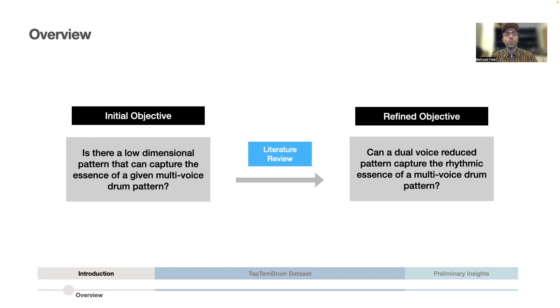If so, we wanted to know what would be the ideal dimensionality of such pattern. After some extensive literature review conducted by my colleague Blazer, we found evidence that if there exists a reduced representation, a dual-voice pattern should most likely be enough for capturing the rhythmic essence.